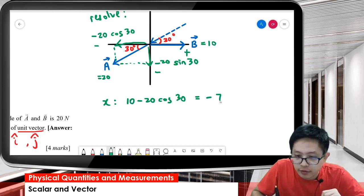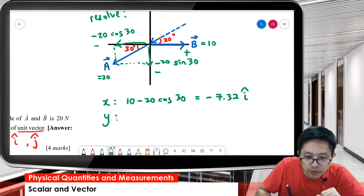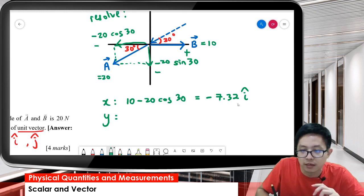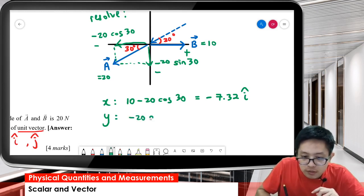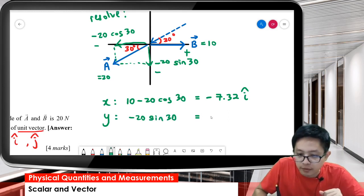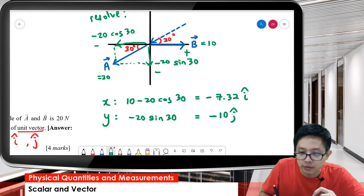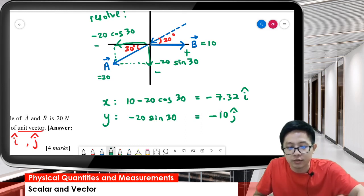For the y component, we have negative 20 sine 30. We have negative 10 j. Negative means going downward. Negative i means going to the left.